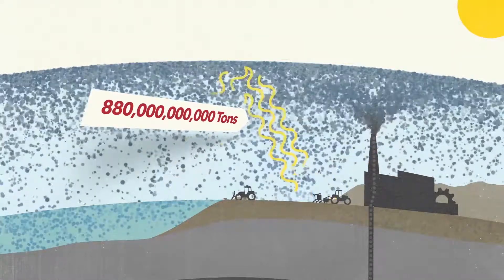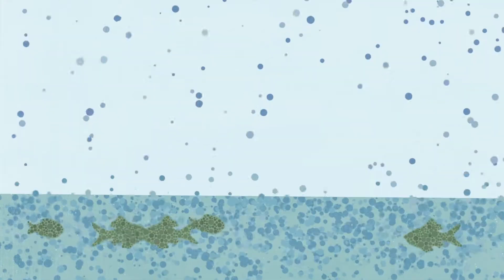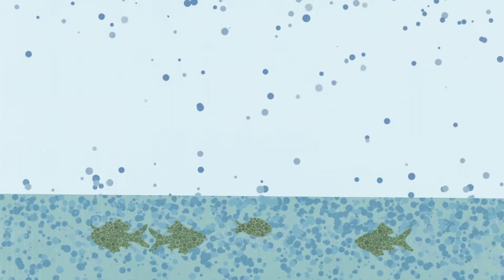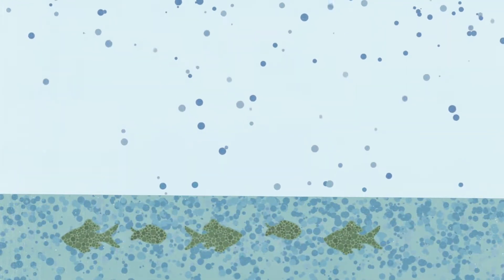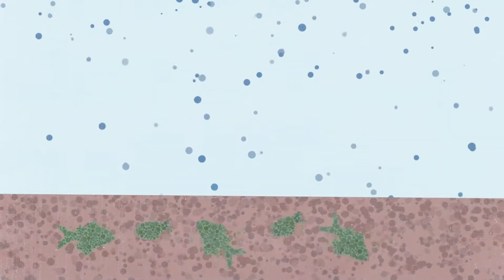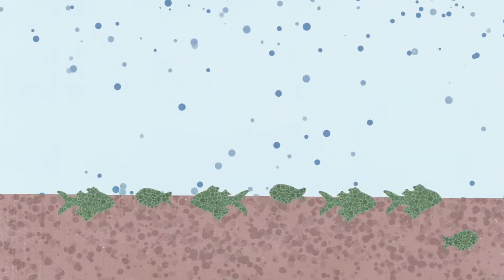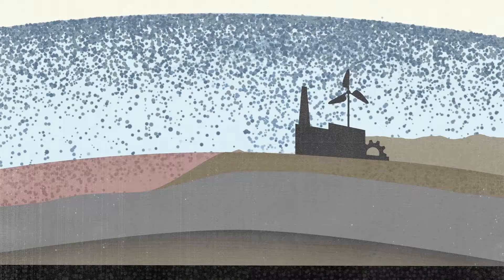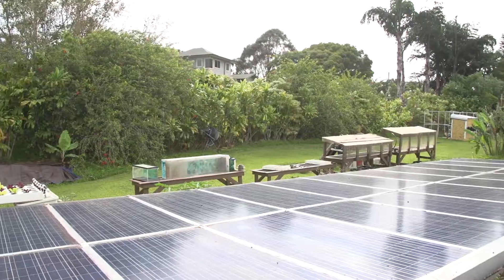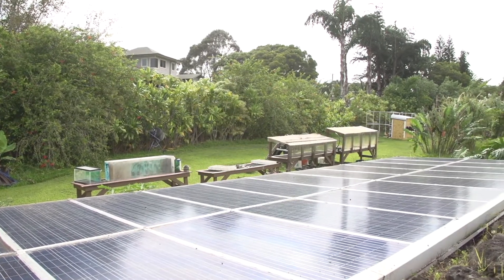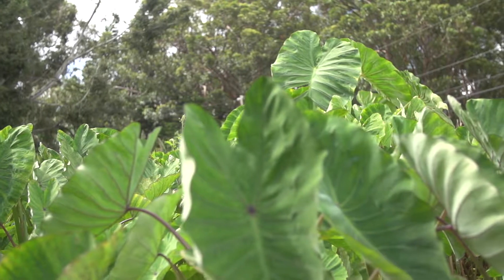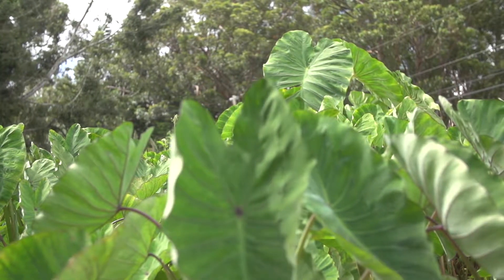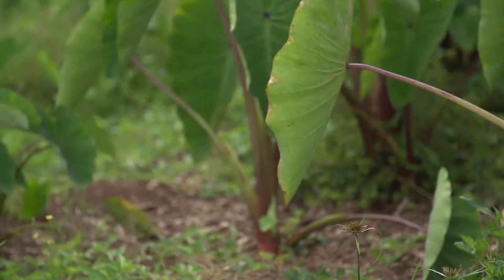Now the oceans have absorbed a lot of this excess carbon, which is resulting in ocean acidification and is accelerating mass extinction of sea life. So in order to save life as we know it, we have to stop releasing fossil carbon. The big question is: where do we put the excess carbon to get the cycle back into balance? The answer is literally in the soil.